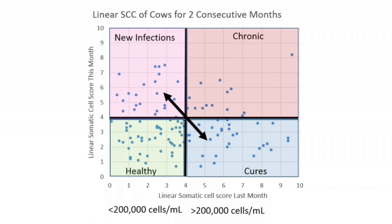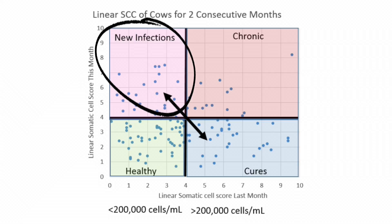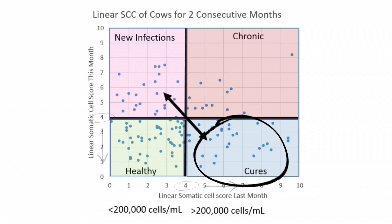We've also got cows that were low last month but went above our threshold this month — those are our new subclinical infections. And the reverse: animals that were high last month and have gone low this month are spontaneous cures, cows whose cell count dropped without any intervention. A hallmark of a herd with an environmental mastitis problem is many new infections and spontaneous cures, because these pathogens aren't adapted to living in the udder and cause short-term infections that are spontaneously cured. When we see these trends, it tells us to go look at the environment those cows are in.